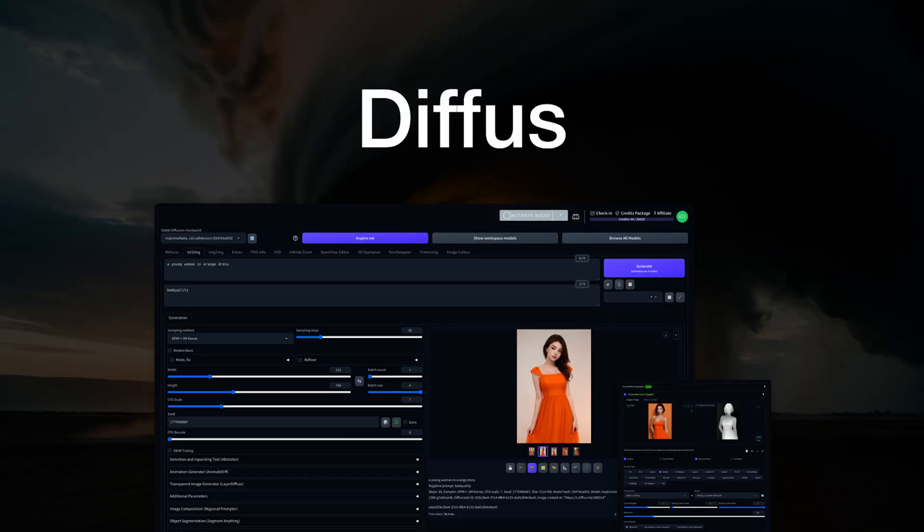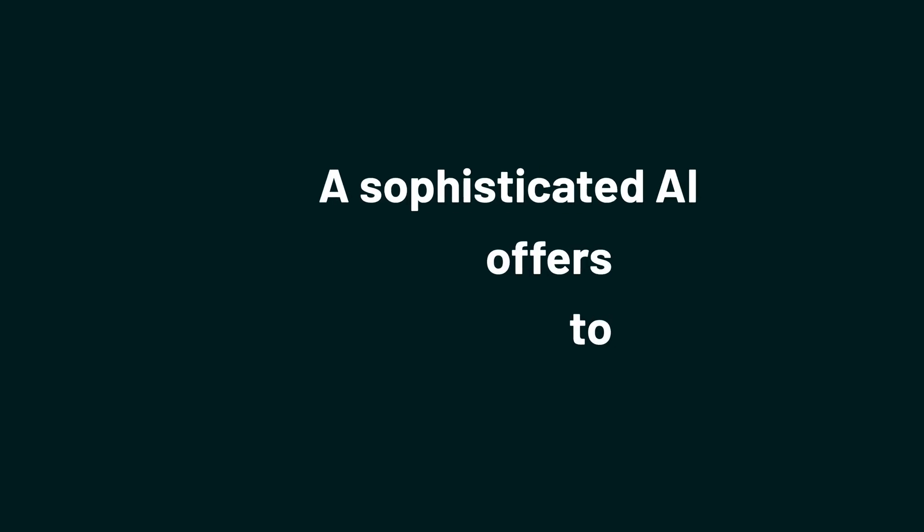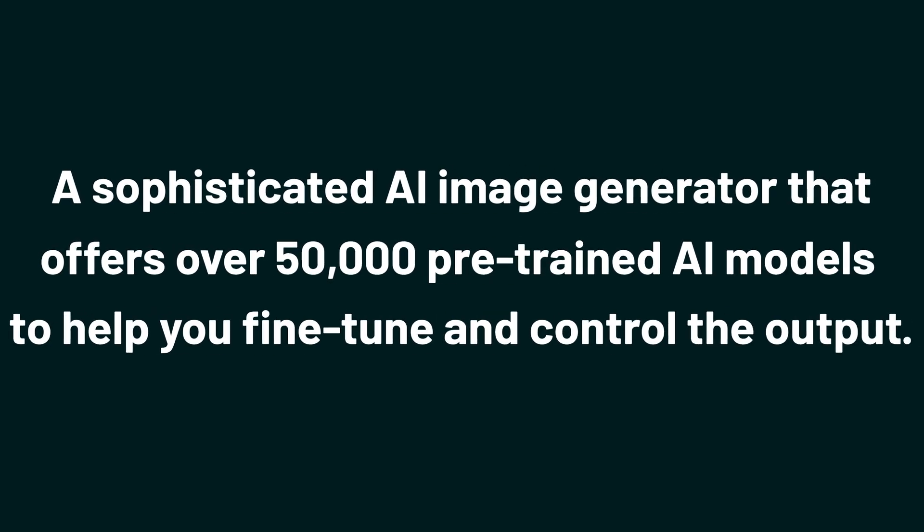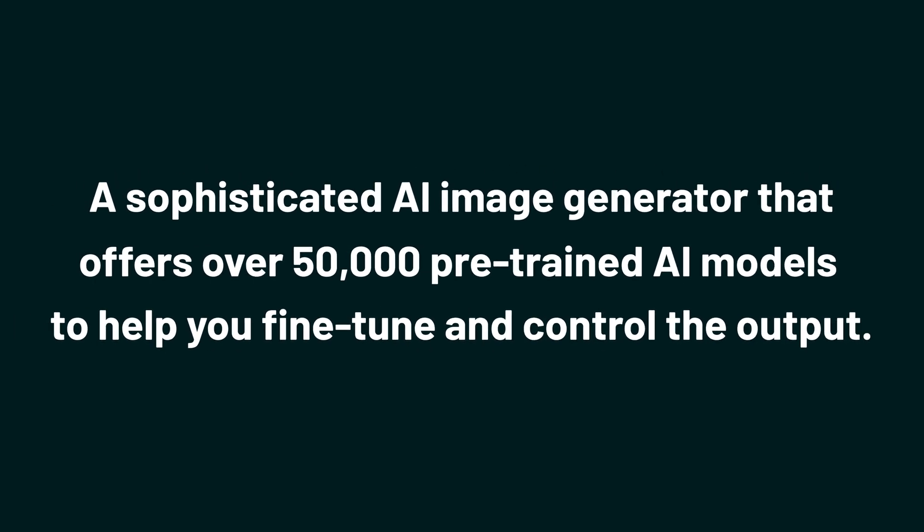What's up, Sumo-lings? I'm Madison with AppSumo, the best place to get insane deals on business software. Today we're taking a look at Diffuse, a sophisticated AI image generator that offers over 50,000 pre-trained AI models to help you fine-tune and control the output.